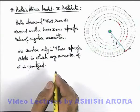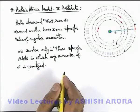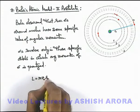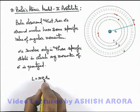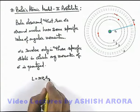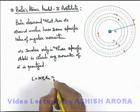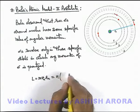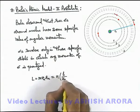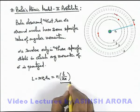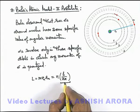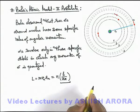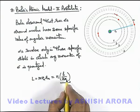For a specific nth orbit, the angular momentum of the electron is written as mvₙrₙ, where vₙ is the speed of the electron in the nth orbit and rₙ is the radius of the nth orbit. We observe that this angular momentum is an integral multiple of a minimum value, that is h over 2π. So h/2π is the least possible value of angular momentum, and all higher orbit values are integral multiples of this.